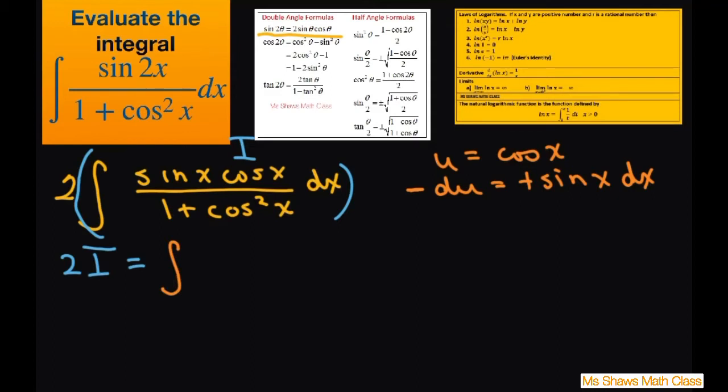I'm going to write this as sine dx is negative du. So this is going to be, I'm going to put this 2 here. So 2 and I have u divided by 1 plus u squared. And then du is negative du. So I'm just going to put du here and put the negative in front.